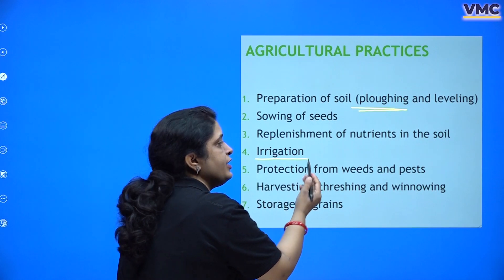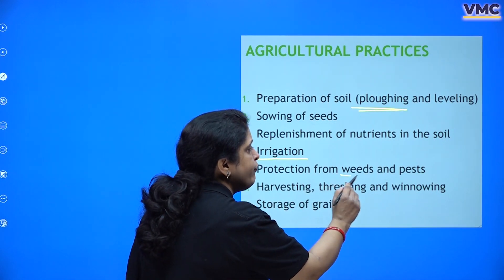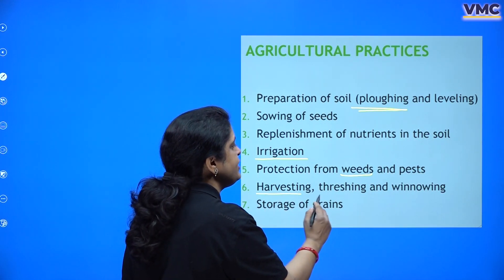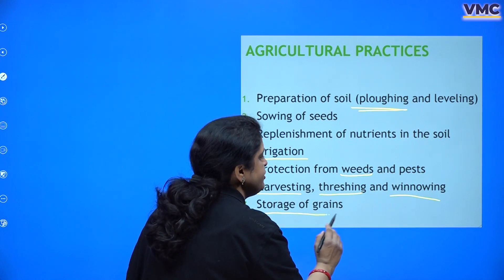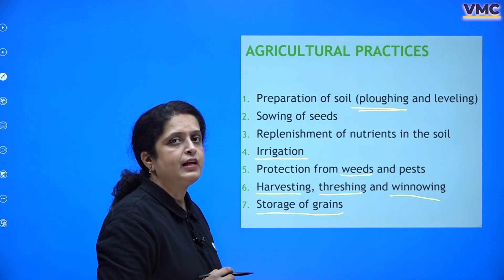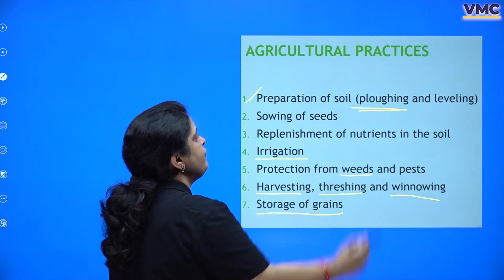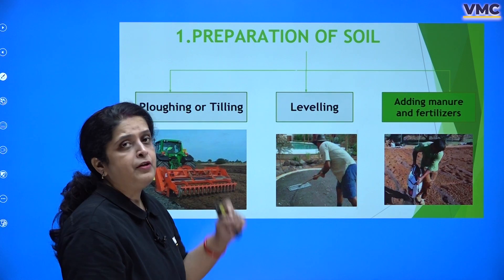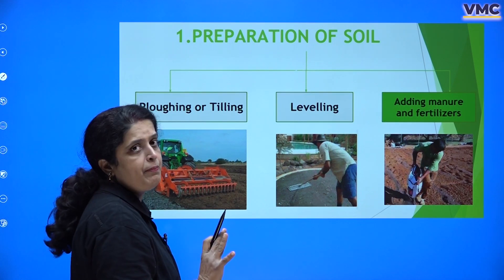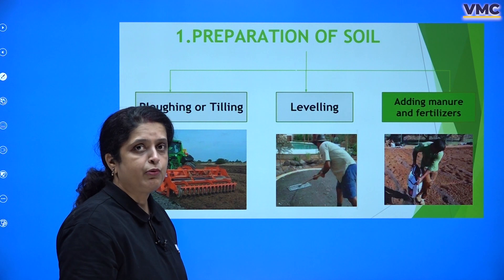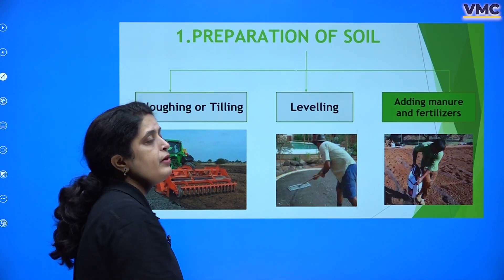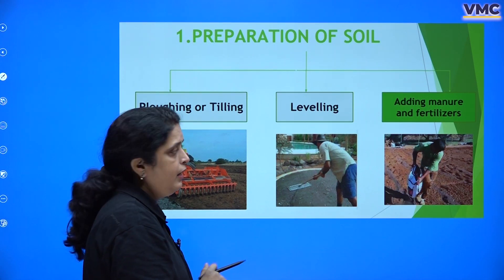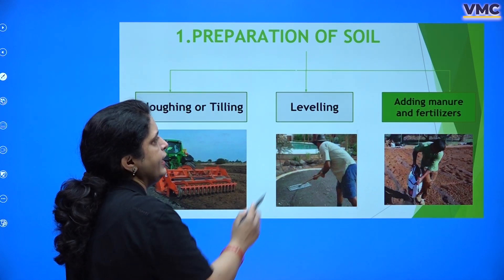Then we do irrigation — providing water — and remove unnecessary plants by weeding. After that come harvesting, threshing, winnowing, and storage of grains. All of these steps are very important. For preparation of soil, the two key processes are plowing or tilling, and then leveling — the third step can be treated as separate and done after sowing as well.